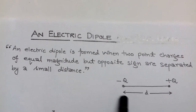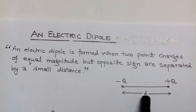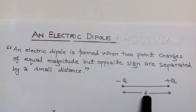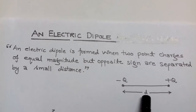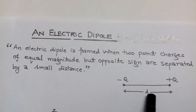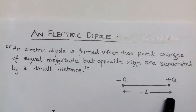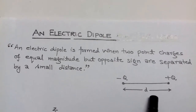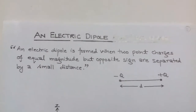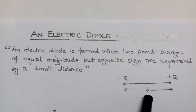Here, the minus q charge is placed on the left side and plus q is placed on the right side. When we take the midpoint as the origin, the left side of the origin is taken as negative and the right side as positive. Similarly, minus q is placed on the left and plus q towards the right, and the distance d between these two opposite charges is very small.